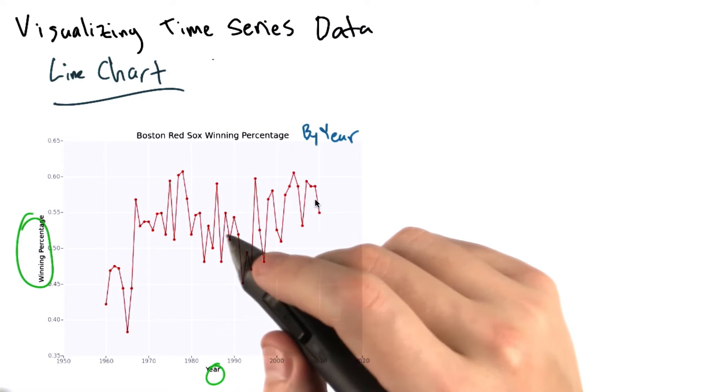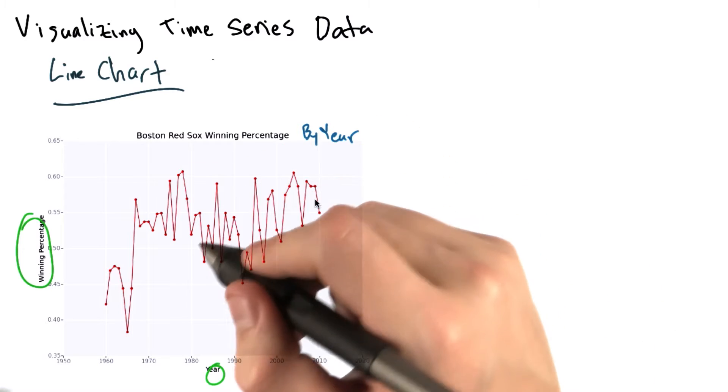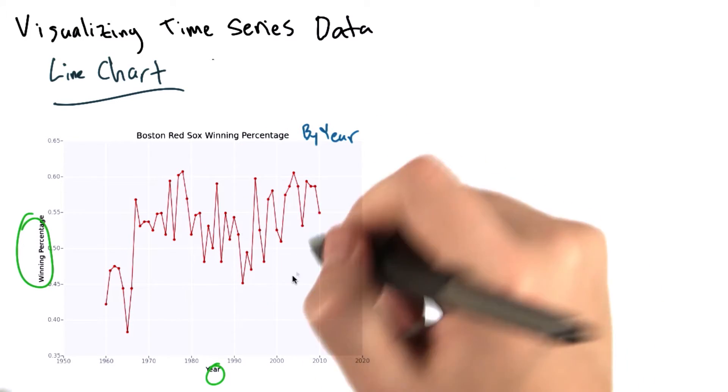So, to mitigate the shortcomings of a scatter plot, we can plot the same data as a line chart and connect the dots with lines, as we see in this image.